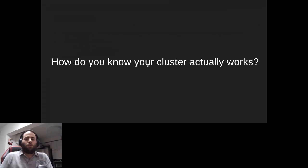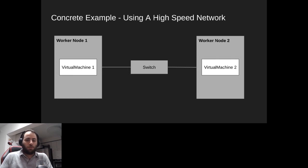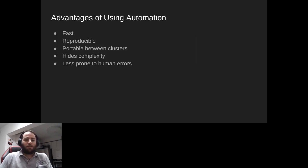Let's give a concrete example. Say we have two worker nodes connected using a high-speed network — they both have specialized network interface cards and a switch that supports this kind of high-speed networking. We want to check that we have connectivity between two virtual machines on both nodes. We can do it by hand, but using automation has a lot of advantages: it is fast, reproducible, portable between clusters, and hides a lot of complexity.